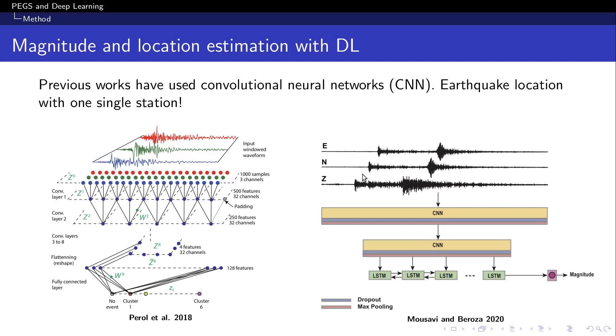Before these works, we were thinking that we would require at least three stations to locate an event, but these works have shown that a lot of information is contained in the data and we can do the same task with one single station. In this work, we're going to use a full array of stations to extract the information from the data.